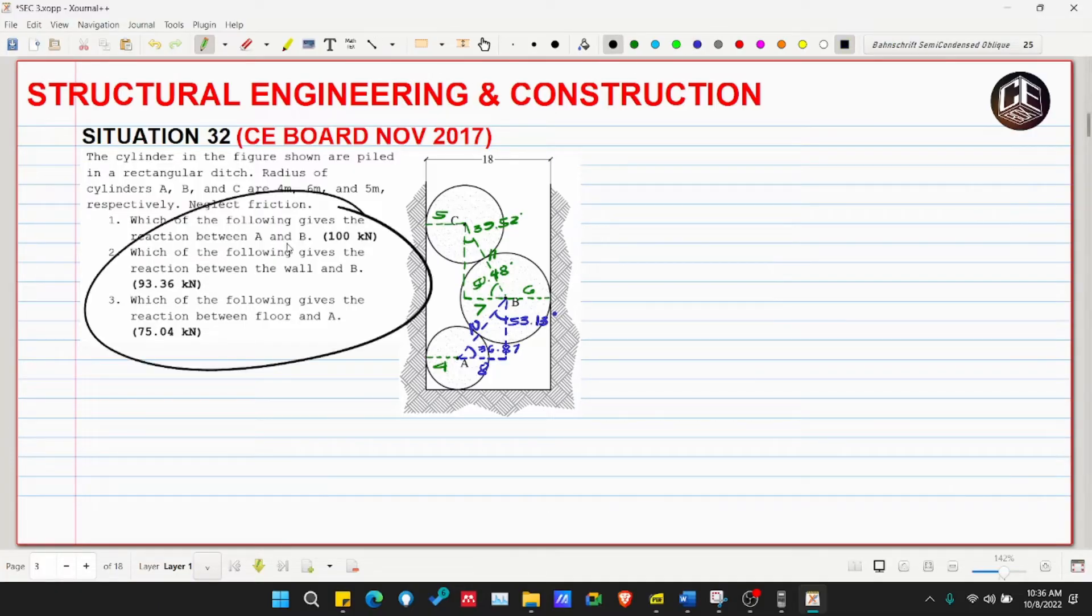Let's mark what's required in our questions 1 to 3. For number 1, which of the following gives the reaction between A and B? From this point, but before that we need to get the reaction here, then pass it here, then go to B. So we need to go to cylinder C first. We have a given weight that we didn't include in the problem. The weights are: this is 20 kilonewtons, this is 40 kilonewtons, and this is 15 kilonewtons.